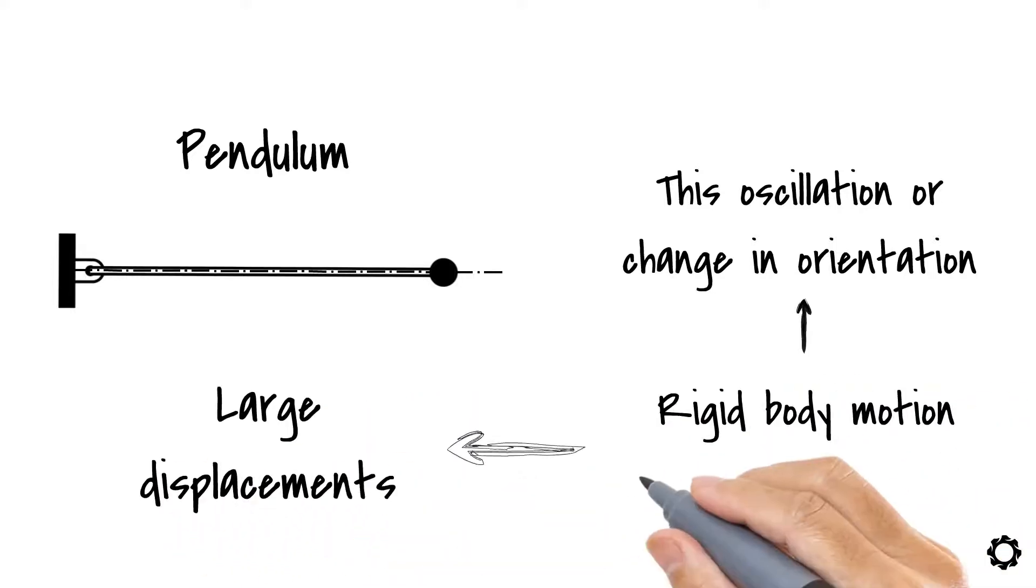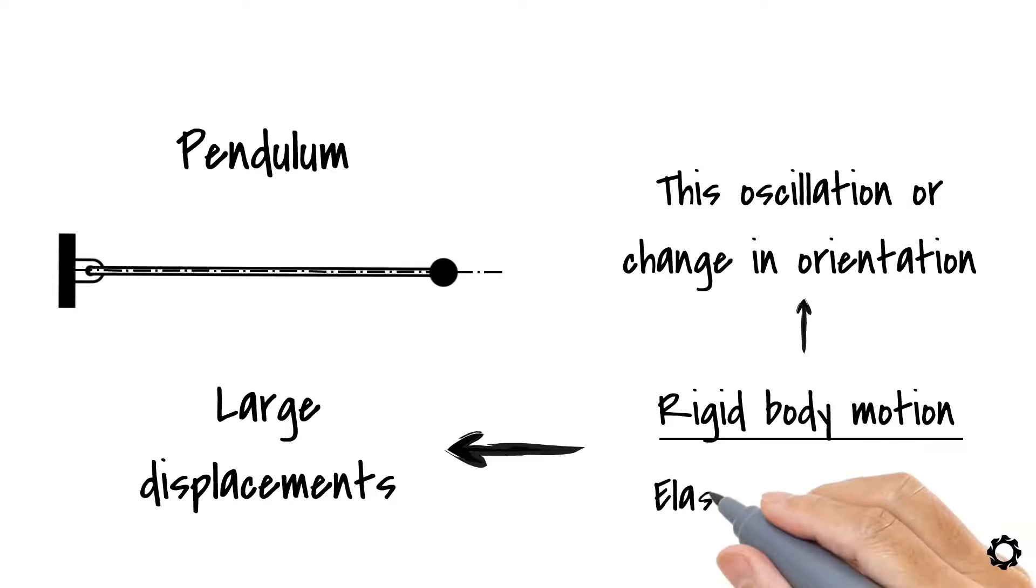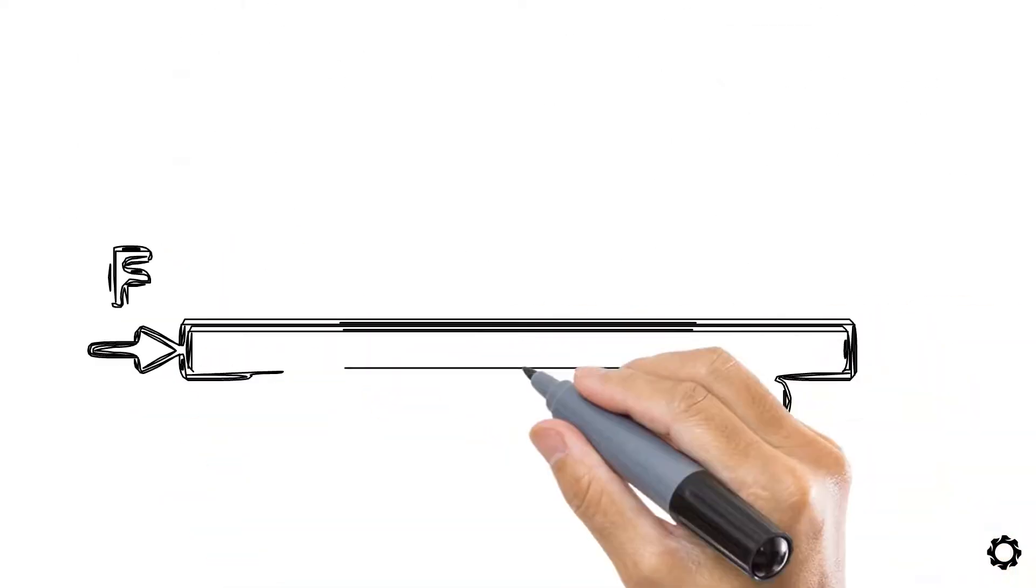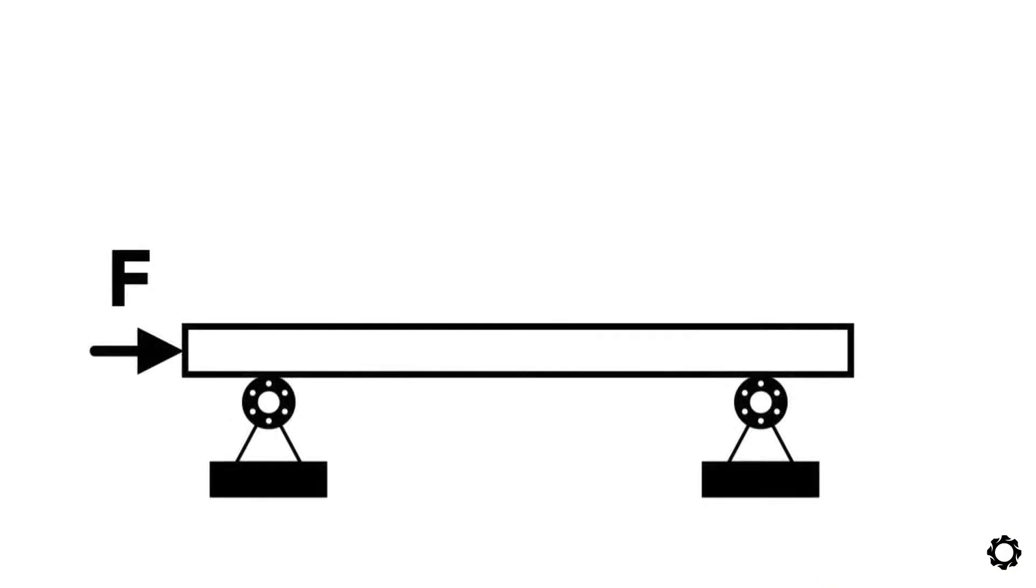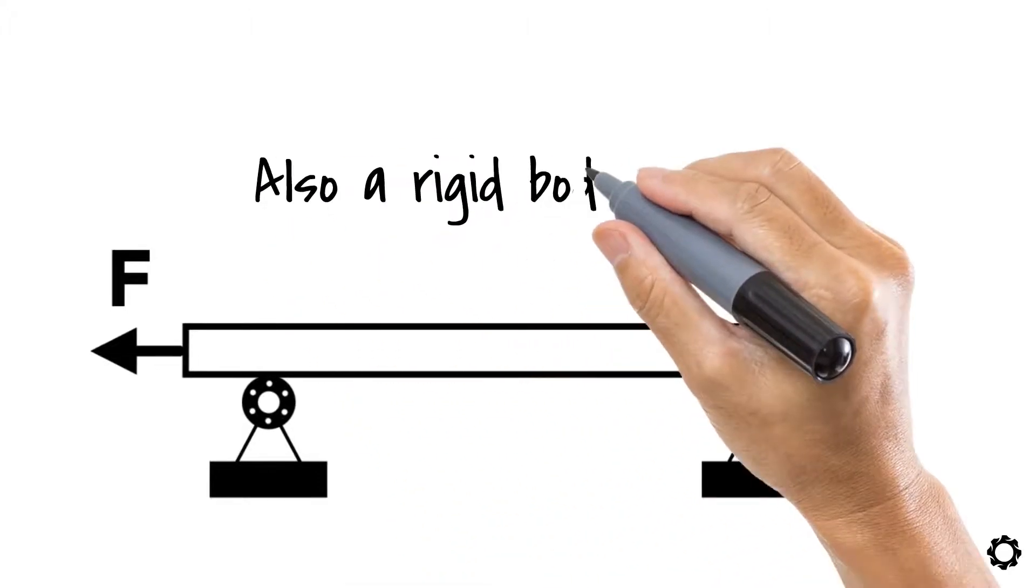Large displacements include rigid body motions as well as elastic deformations. If we take our original beam and substitute the left and right supports by roller supports, under an applied horizontal force, the beam will translate. This is also a rigid body motion.